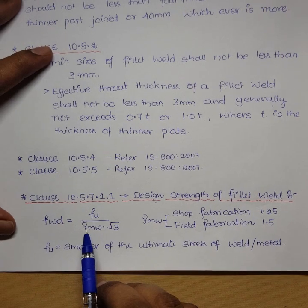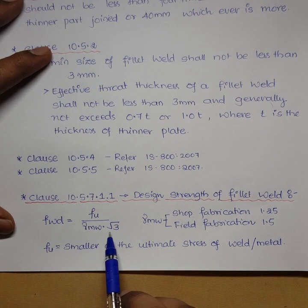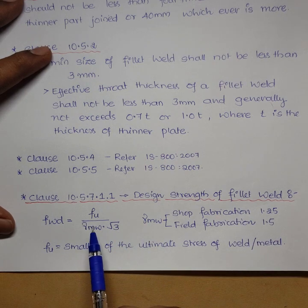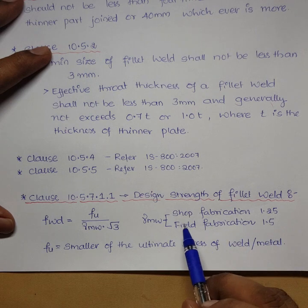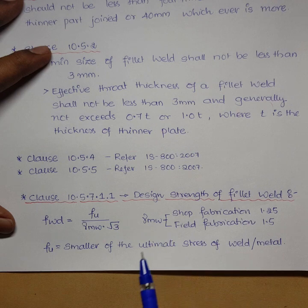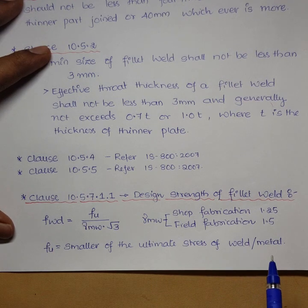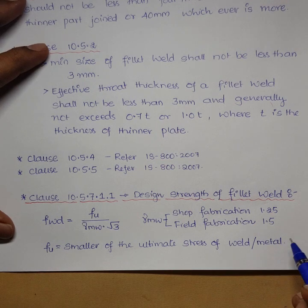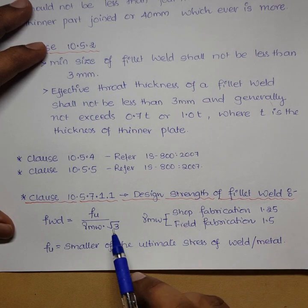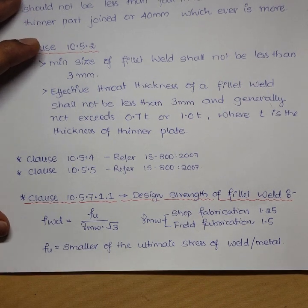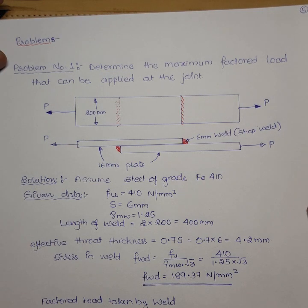The design strength fwd is given by: fwd = fu / (γmw × √3), where γmw is the partial safety factor for welds — 1.25 for shop weld or 1.5 for field weld. fu is the smaller of the ultimate stress of the weld or metal; since weld has higher strength than metal, we take fu as the steel grade value. For fe 410 steel, fu = 410 N/mm².